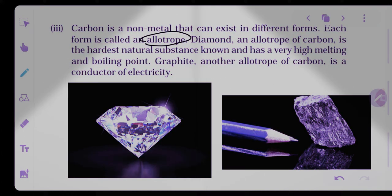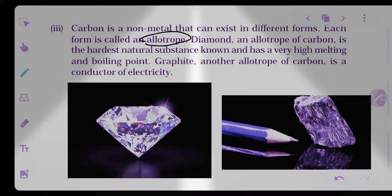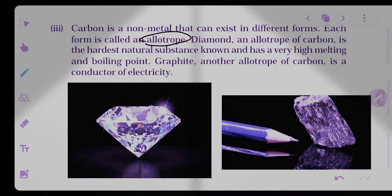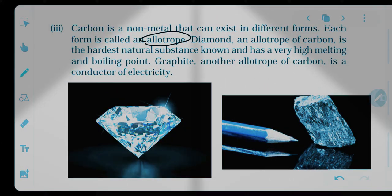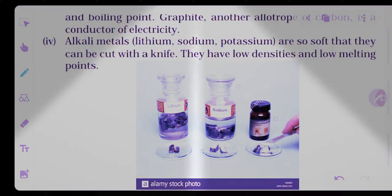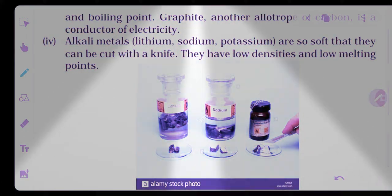Graphite is another form of carbon and is a conductor of electricity. Graphite is generally used in pencils for writing purposes, and it is a good conductor of electricity.